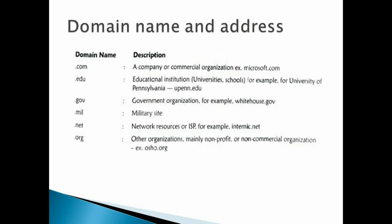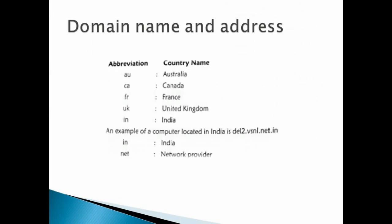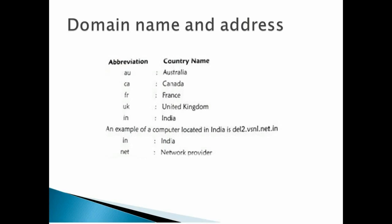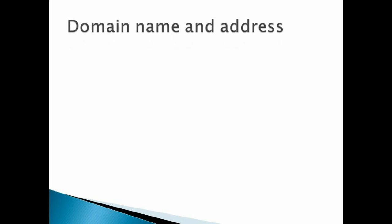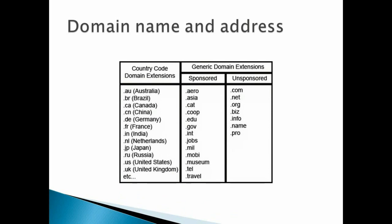.org is used for non-profit or non-commercial organizations. Country-wise extensions include: .au for Australia, .ca for Canada, .fr for France, .uk for United Kingdom, .in for India, .nl for Netherlands, .jp for Japan. In the comment section, tell me what .pk stands for. There are so many domain extensions for different countries.